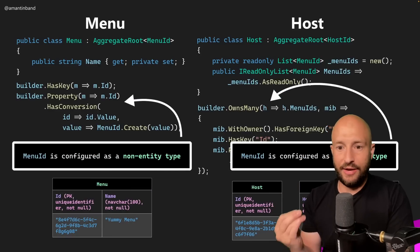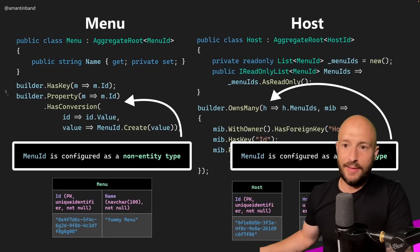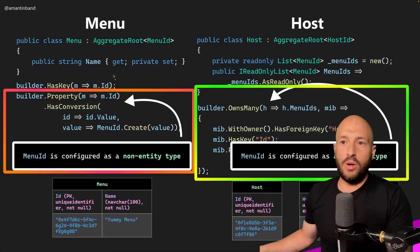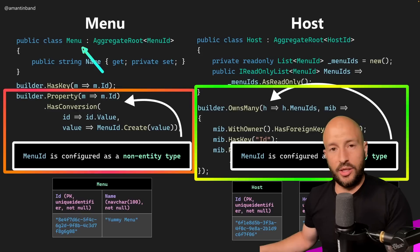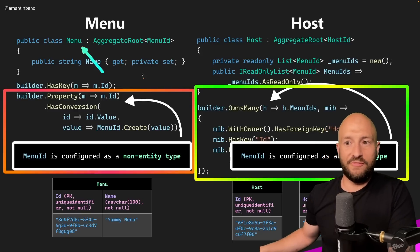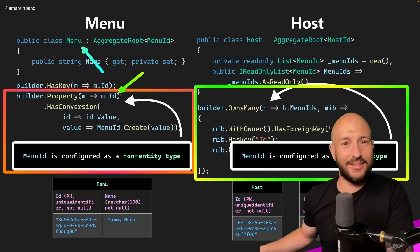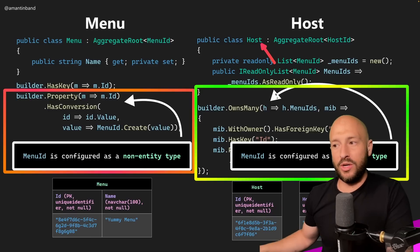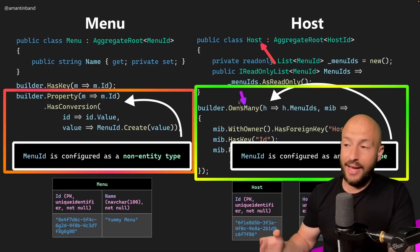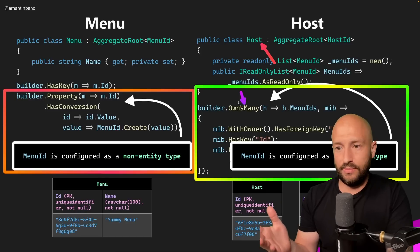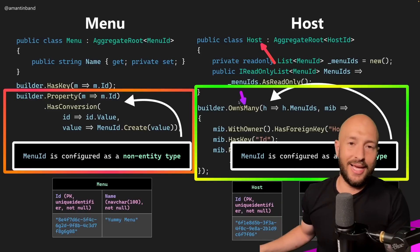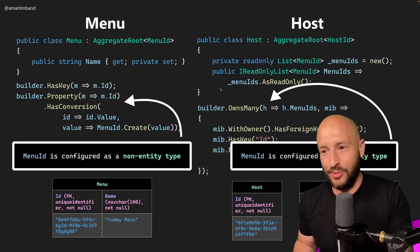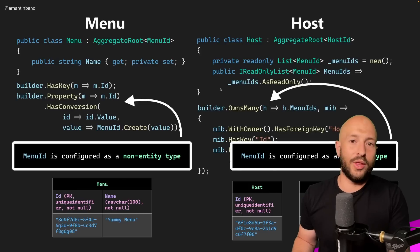The answer is that on the left we're defining the menu ID as a non-entity type, but on the right we're defining it as an entity type. When we define the menu entity configuration in Entity Framework Core, we define the ID to be a non-entity type. But when defining the entity configuration for the host, we define it to be an entity type. This throws an exception — probably shouldn't be a null reference exception, but that's what actually happens. Even though this is the recommendation of ChatGPT and many other experts, it doesn't actually work with Entity Framework Core.